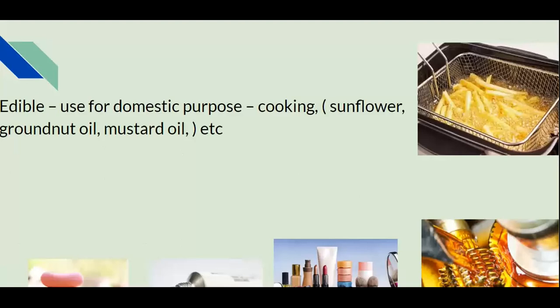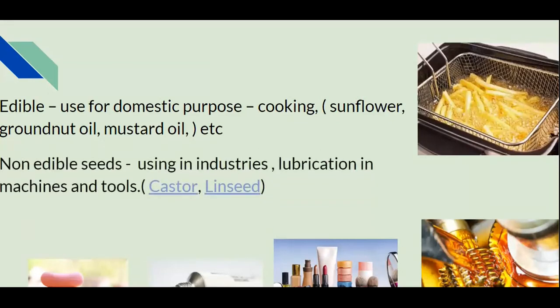Edible seeds are mainly used for domestic purposes like cooking — examples include sunflower, groundnut oil, and mustard oil. Non-edible seeds such as castor and linseed are mainly used for industrial purposes, including lubrication in machines and tools. We can also see in the images oil used in machines and for making soaps, ointments, and cosmetic items.